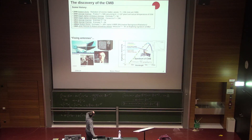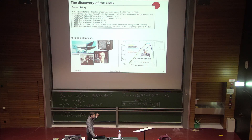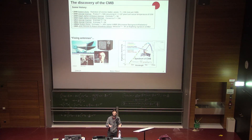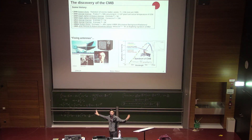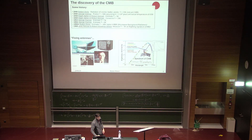Wilson and Penzias observed the cosmic microwave background photons — though that's not quite accurate, because they had been observed before. That's why they were searching for the origin of those photons. They were working on telecommunications, and they were the first to say these photons are coming from somewhere that is not on Earth. Then various experiments came along.